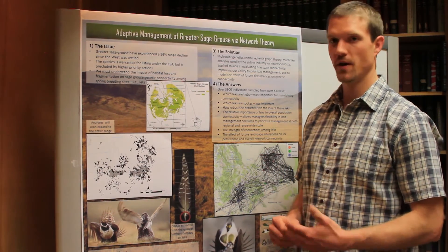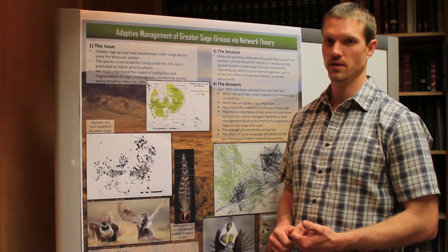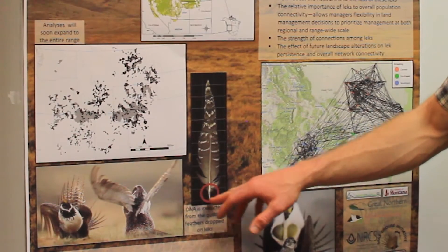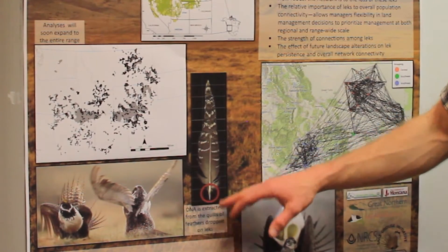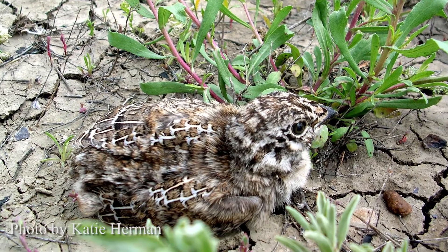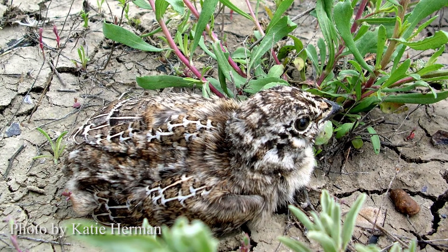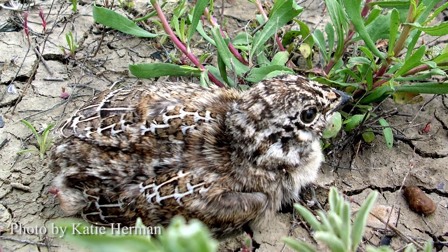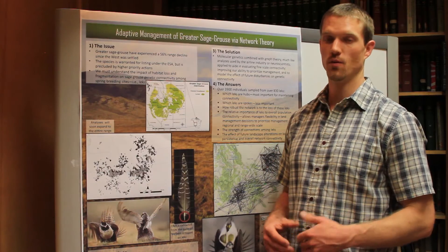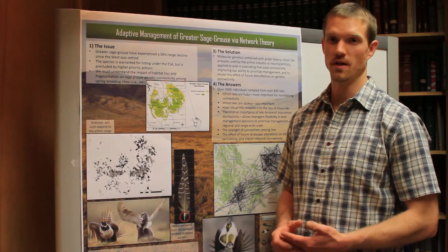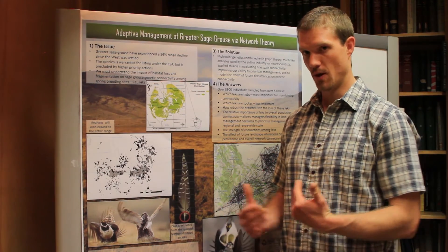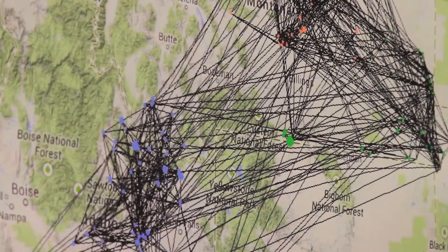We get feathers from the birds at that point, and we extract the DNA from the tip of the feather, so we don't even have to handle the birds. From that, we can identify down to an individual. And once we have individuals identified, we also have genetic information that tells us about relatedness.